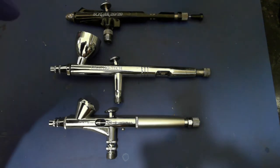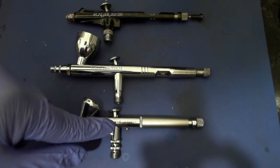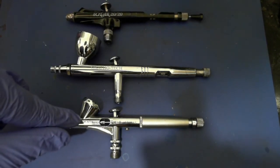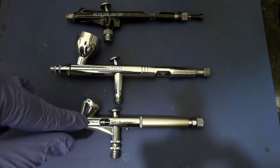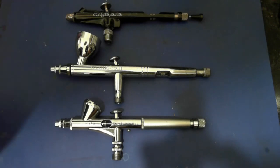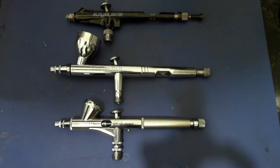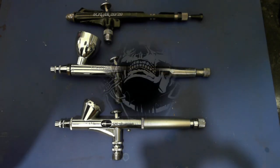There are three elements that all airbrushes have: the trigger, the feed system, and the mix point. All airbrushes can be categorized based on these three items. So for the first part, we'll see those three categories, and let's begin.